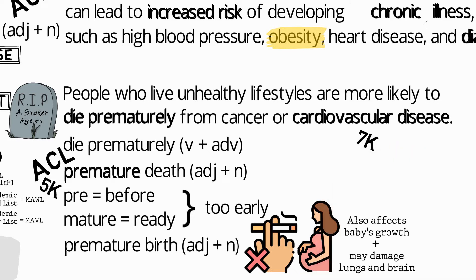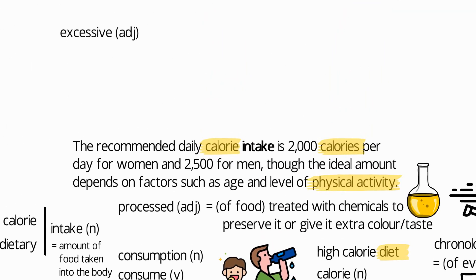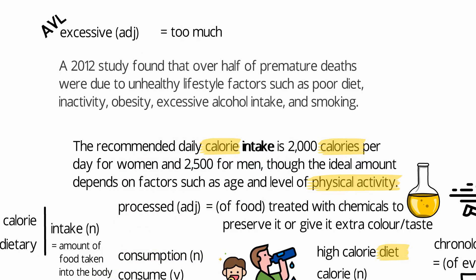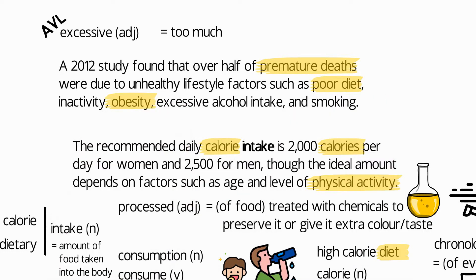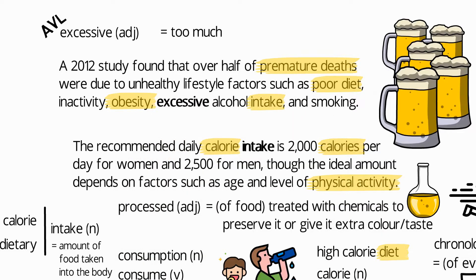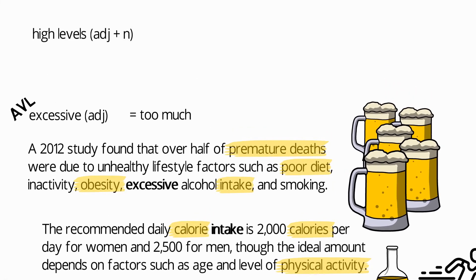'Cardiovascular' is another mid-frequency word meaning related to the heart and blood vessels. It is similar to 'heart disease,' which is actually a kind of cardiovascular disease. 'Excessive' is an adjective in the Academic Vocabulary List meaning too much. For example: 'A 2012 study found that over half of premature deaths were due to unhealthy lifestyle factors such as poor diet, inactivity, obesity, excessive alcohol intake, and smoking.' This example sentence nicely combines many of the words and phrases we've covered for the topic of health.